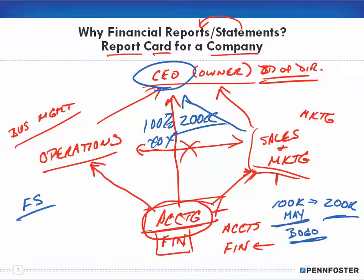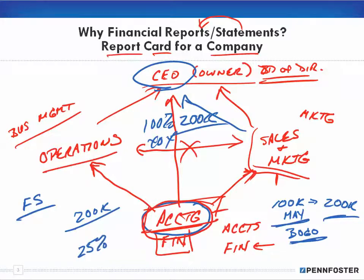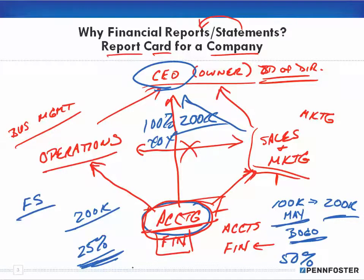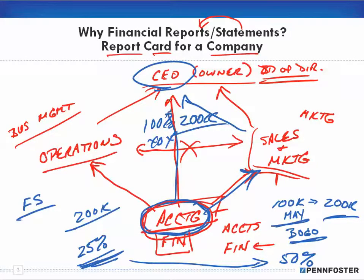Well, the accountant sits there and says, 'Yeah, okay, your sales went up to $200,000 — but we're losing money.' Why? Because if our gross profit is only 25% on the product, we're losing money. It doesn't matter how much you increased your sales. You increased our sales to $200,000, but you gave away 50% when we're only making 25% profit. You did this wonderful thing, but we're losing money. That's where the accountant comes in — the accountant has to be able to discuss that with the sales and marketing people and explain it to the CEO.